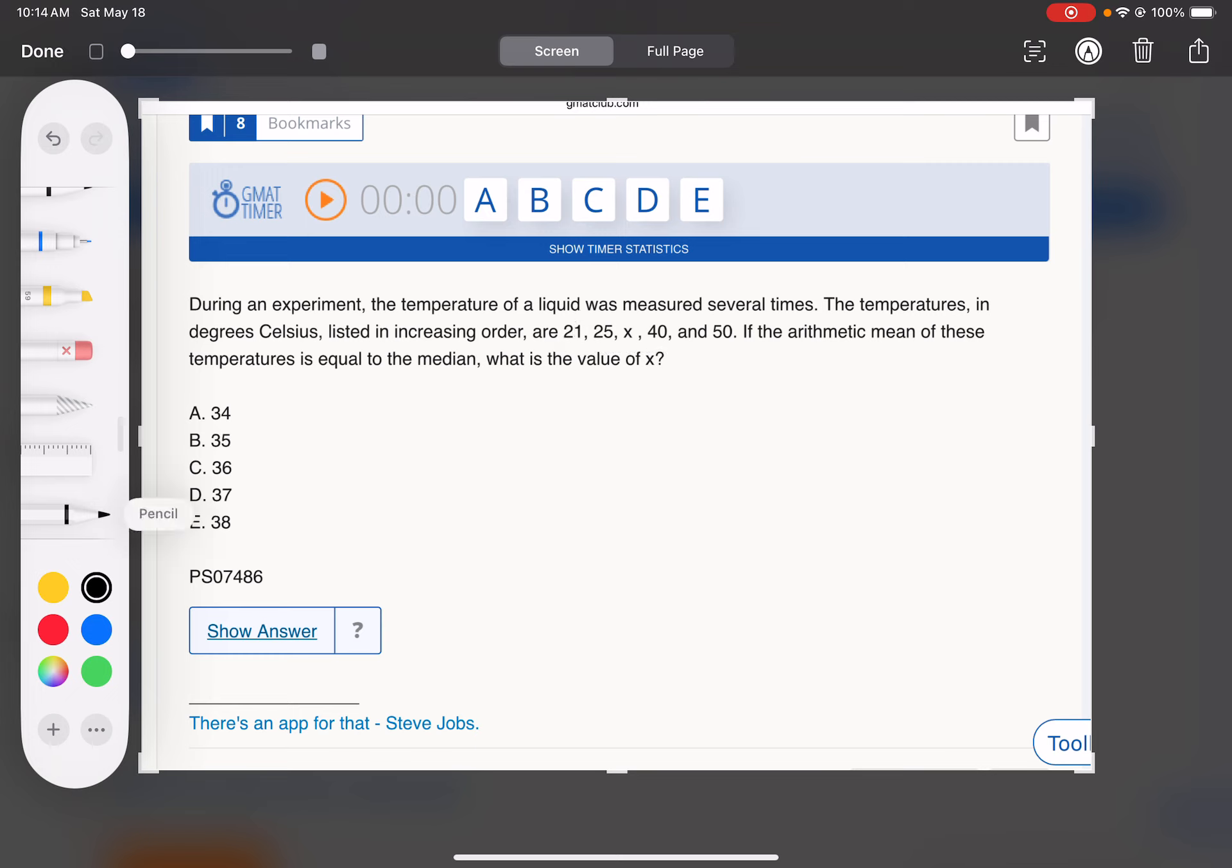That helps a lot. And they say the mean, so 21 plus 25 plus X plus 40 plus 50, that divided by 5, that's the average, is equal to the median. So equals X, the median.